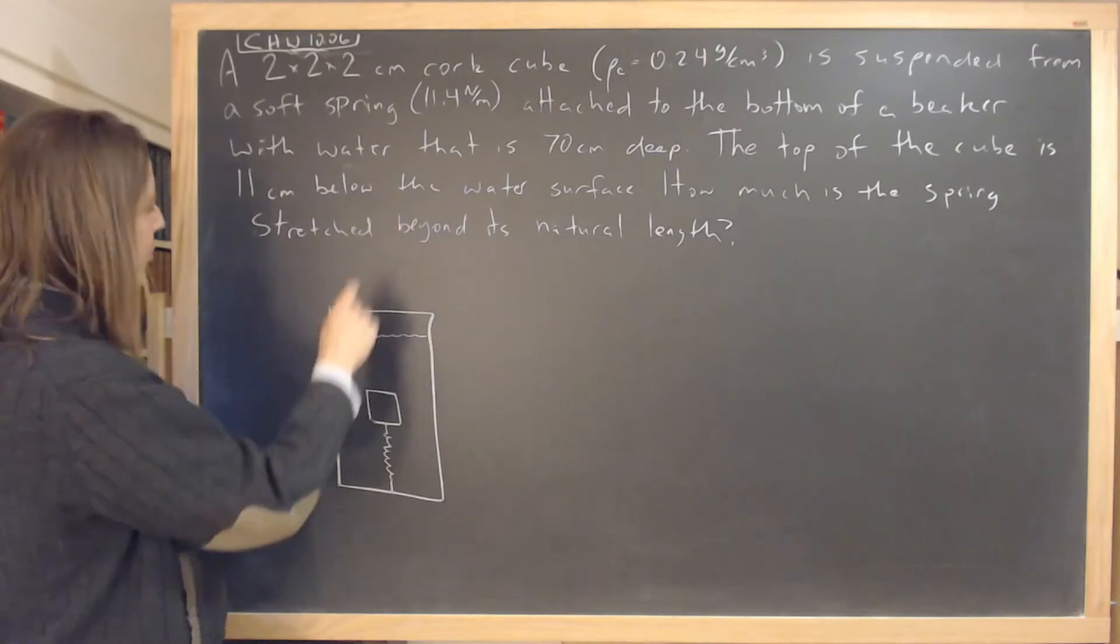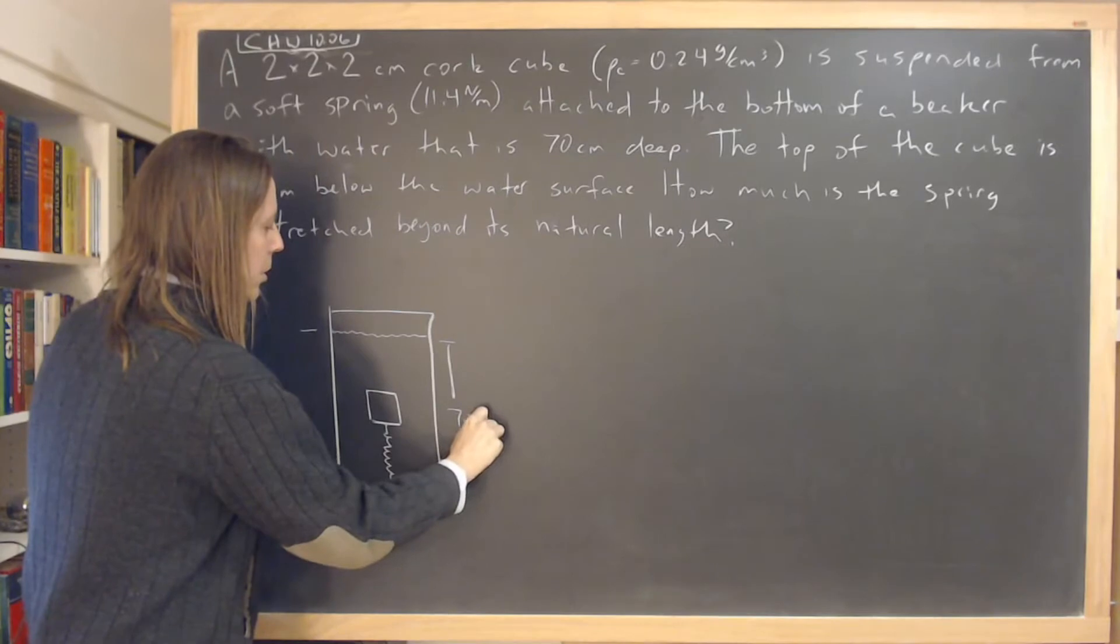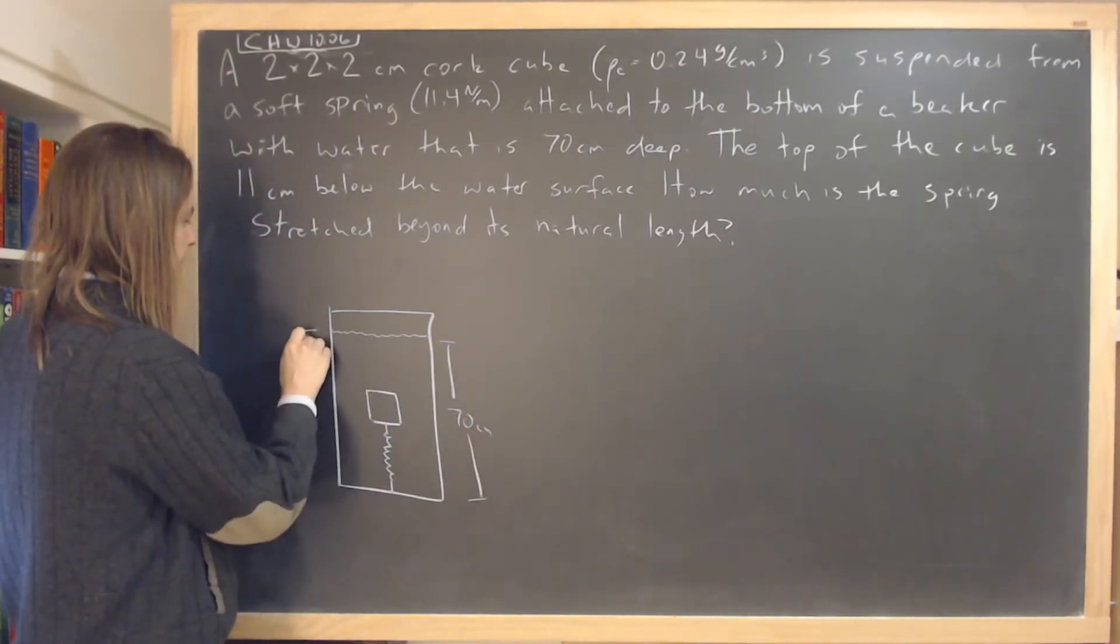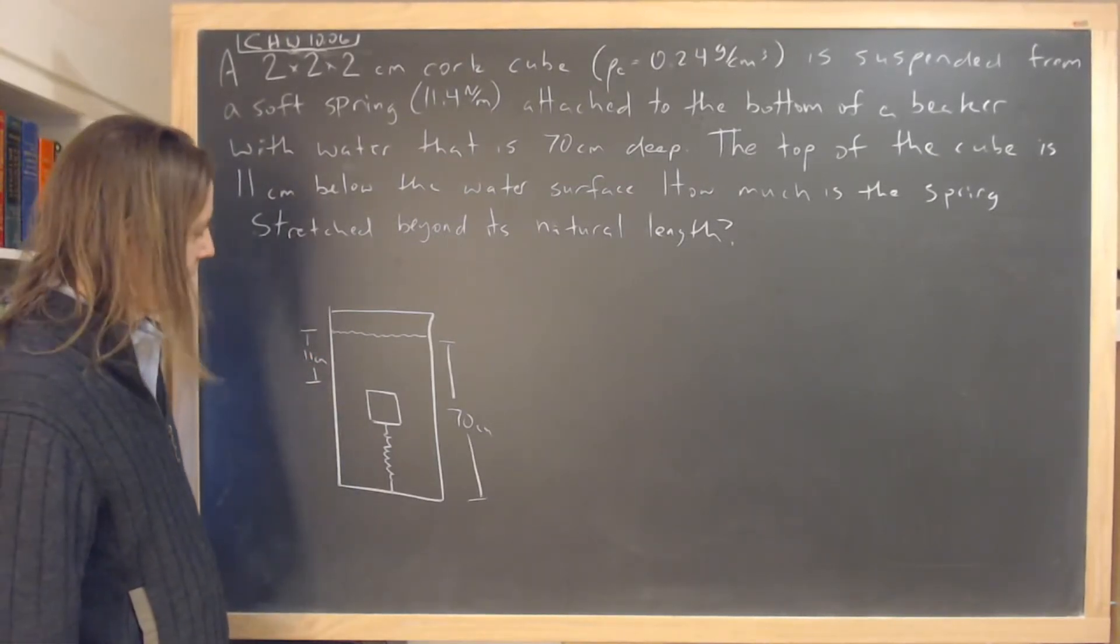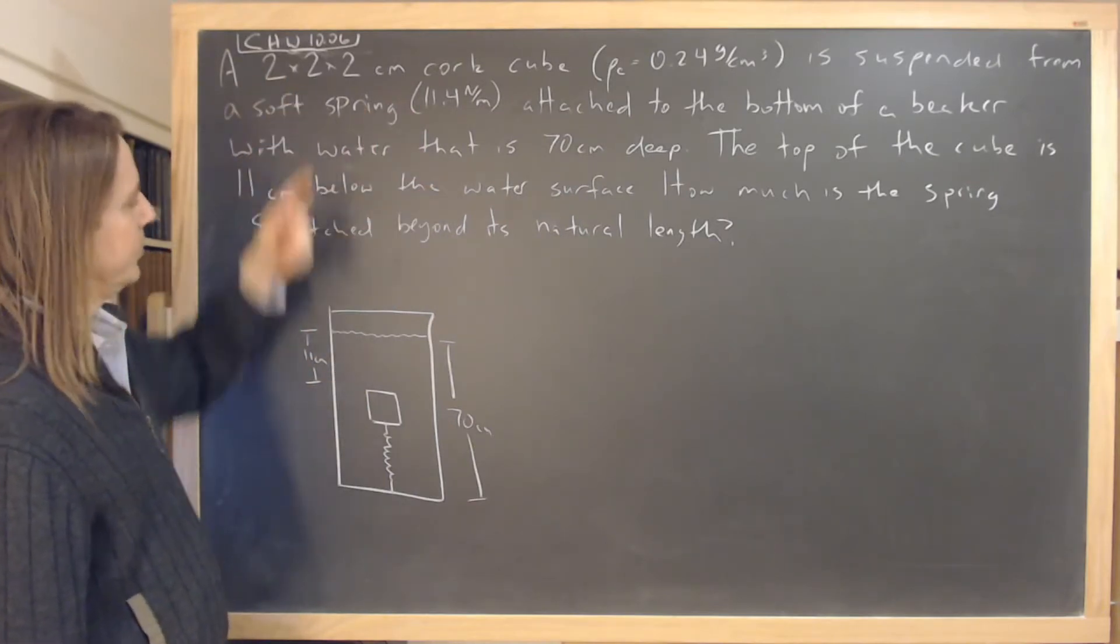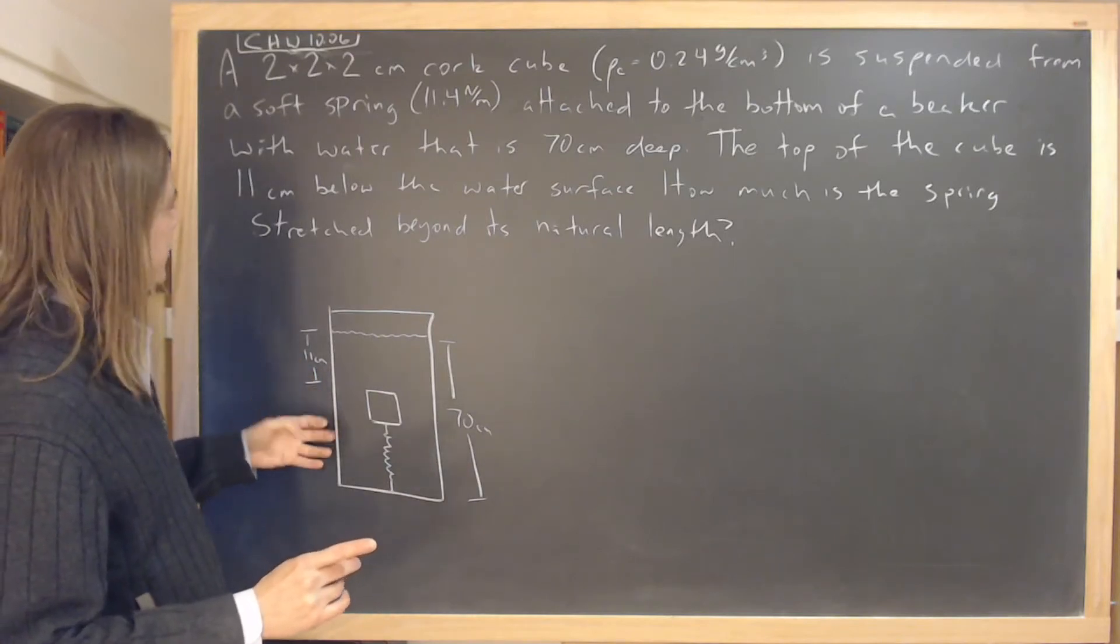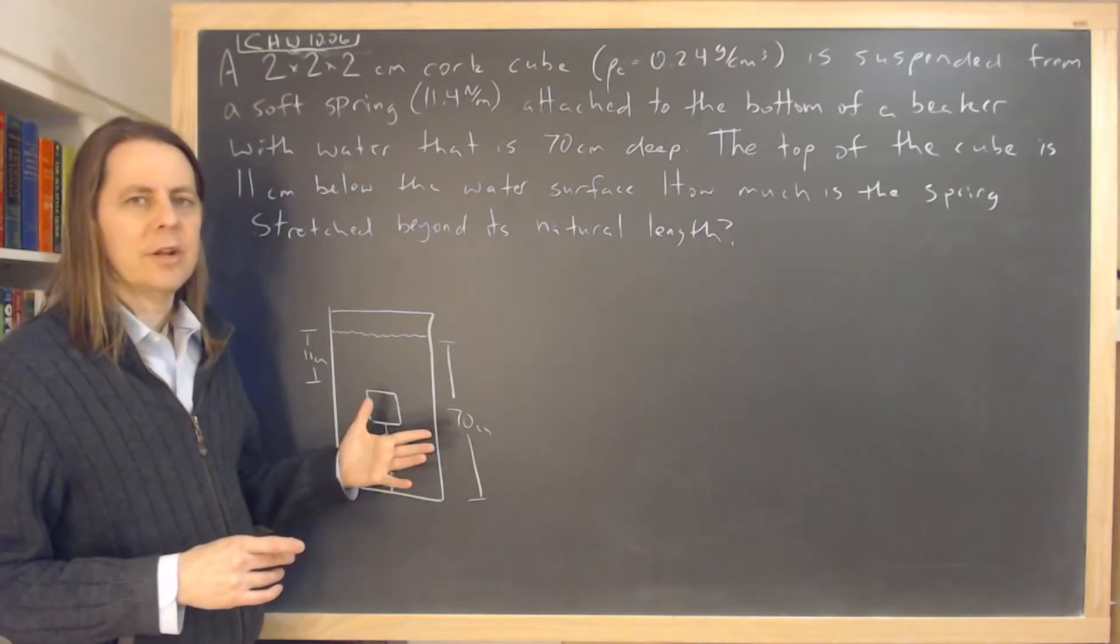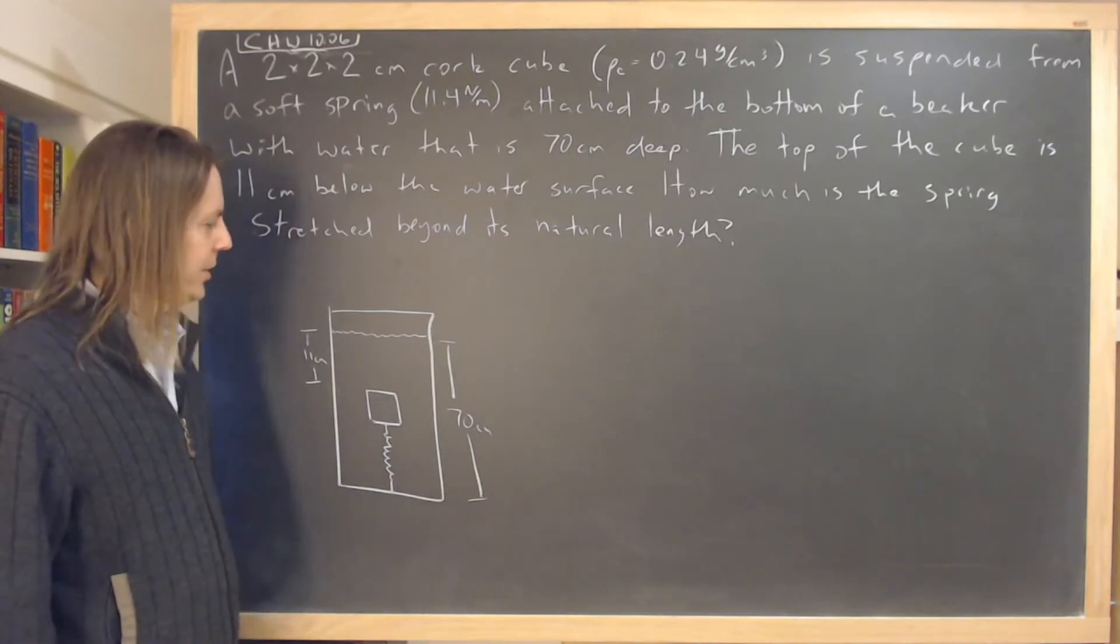And we have some numbers. We have the depth of the beaker, 70 centimeters, and we also have how far down is the top of the cork. And let's see, we have the spring constant and the density and the size, 2 by 2 by 2 centimeter. Okay, but the question is how much is the spring stretched? So this is a problem that's not just fluid mechanics or not just hydrostatics, but there's also a little bit of forces and physics in there to mix them up and make sure you understand them.